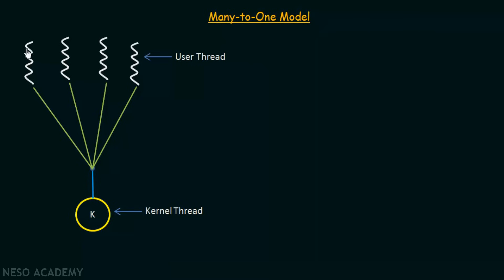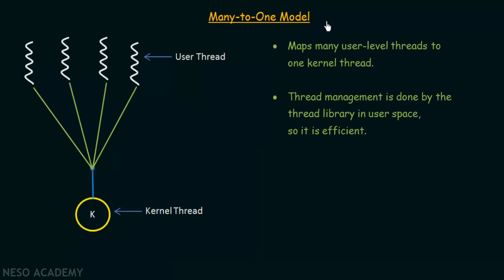From the diagram, the elements on top represent user threads and the circle represents the kernel thread. We can see that many user threads are associated with one kernel thread — that is the many-to-one model. In this model, many user-level threads are mapped to one kernel thread, and thread management is done by the thread library in user space, so it is efficient.